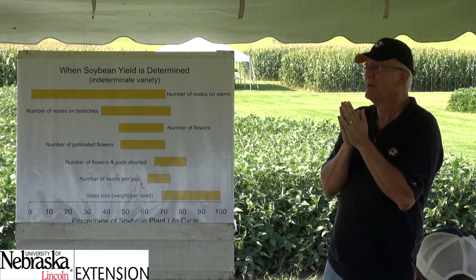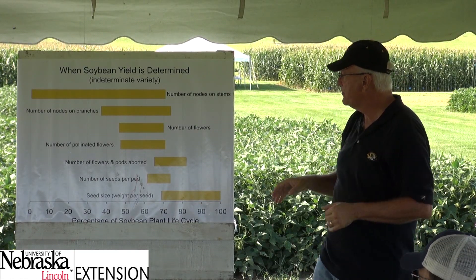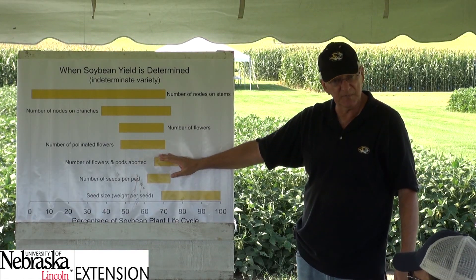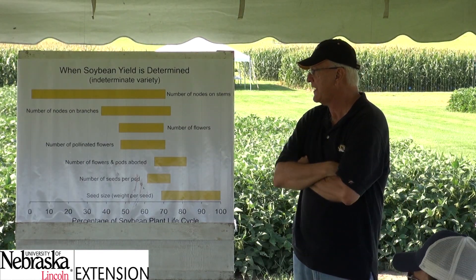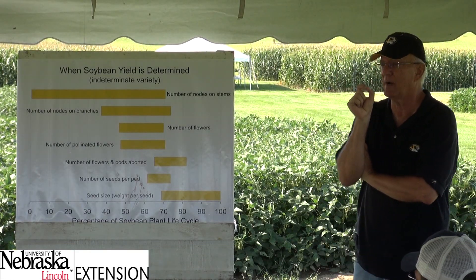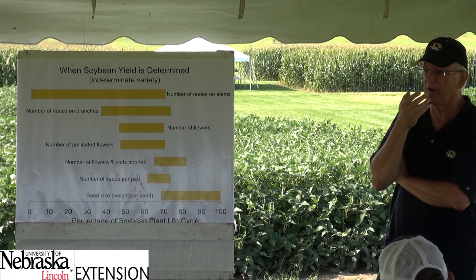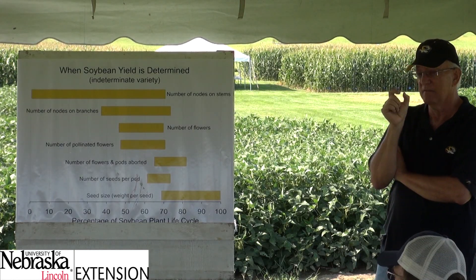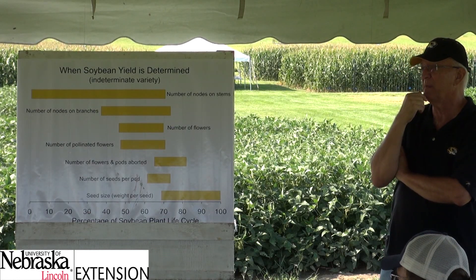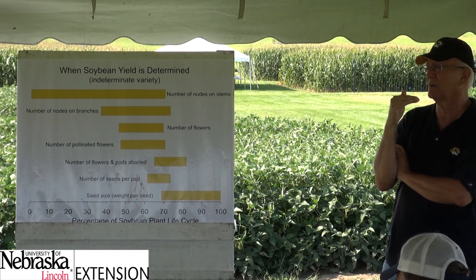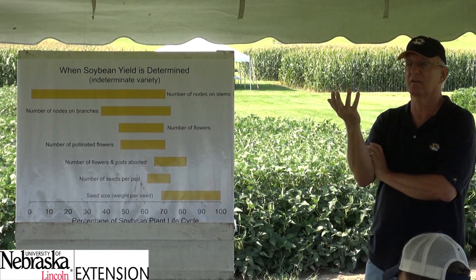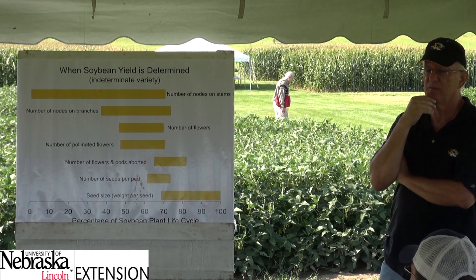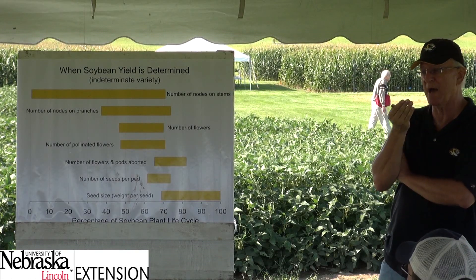The big thing that happens in soybean is abortion or abscission. I say flowers and pods, but technically once it's pollinated it's a pod. What's falling off the soybean plant — and we'll talk about this toward the end of the session — is pods; they may be small and very tiny. Maybe 60 to 70 percent of those flowers will not become pods that end up in somebody's combine. So there's a tremendous amount of attrition — 60 to 70 percent of the flowers produced will not make it as harvestable pods.